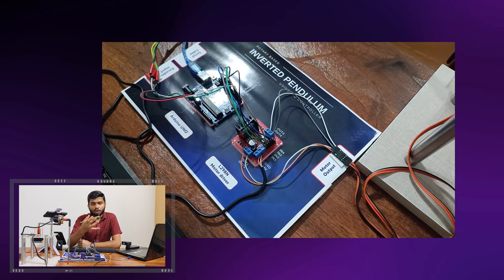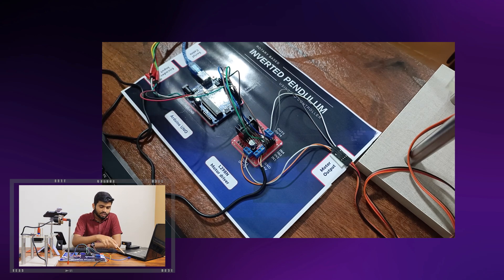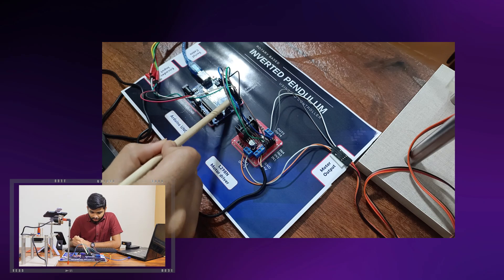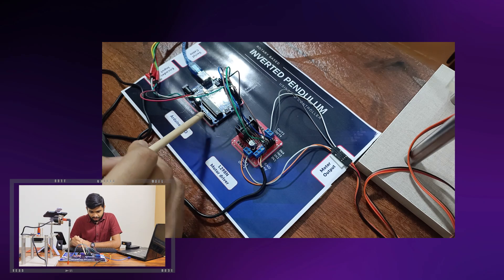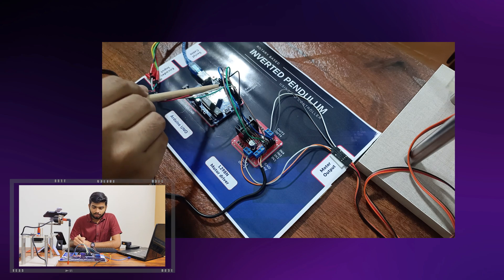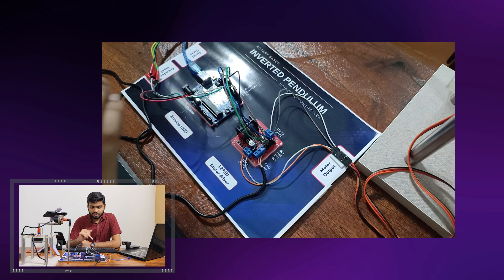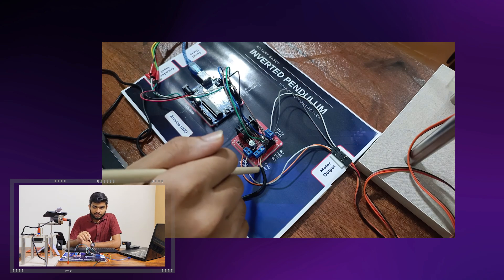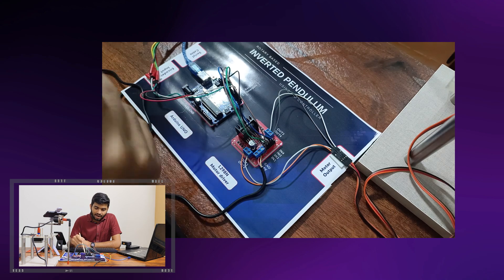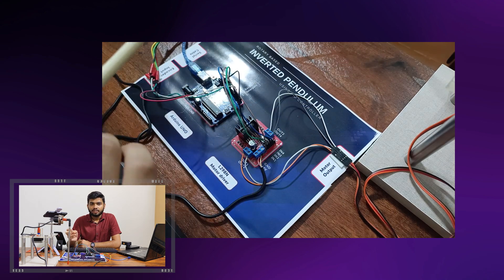Our Arduino has 13 digital pins and 6 analog pins. We have powered this Arduino using a USB cable connected to a laptop. Out of the 13 digital pins, we are using 6 — 4 pins for control of the motor driver and 2 pins for controlling the encoder.